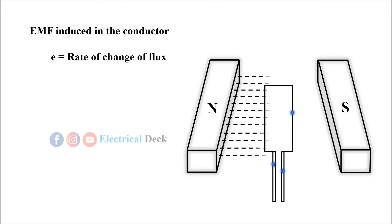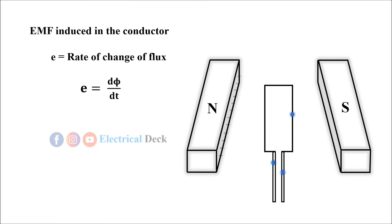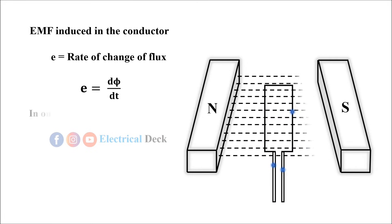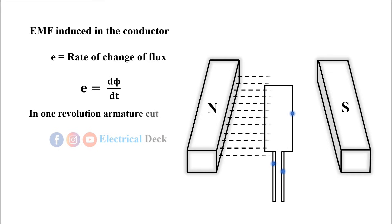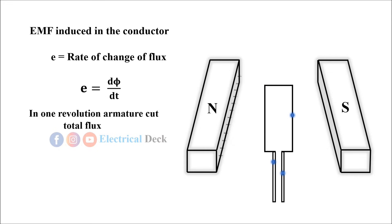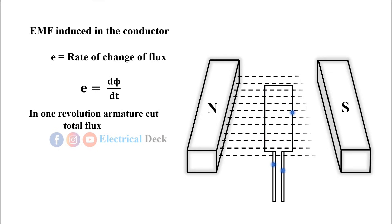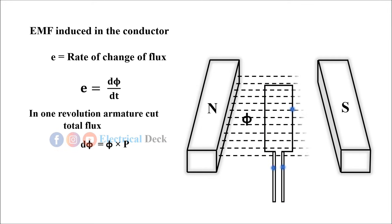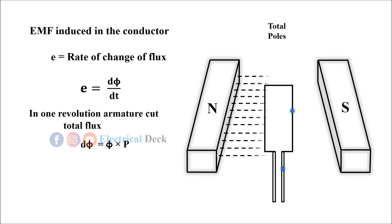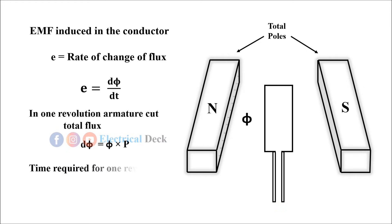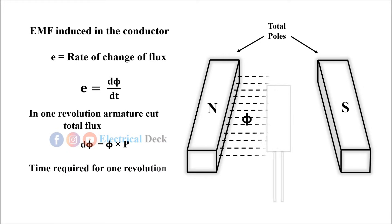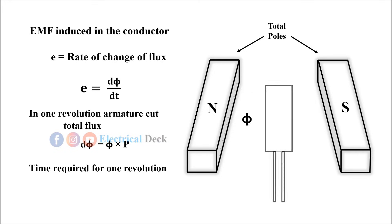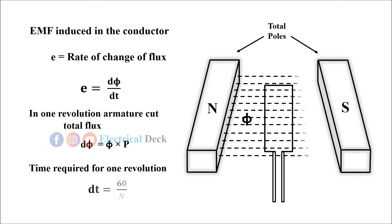In one revolution, the armature cuts the total flux produced by all poles — that is, the change in flux dφ = φ × P. The time required for the armature to complete one revolution is given by dt = 60 / N.